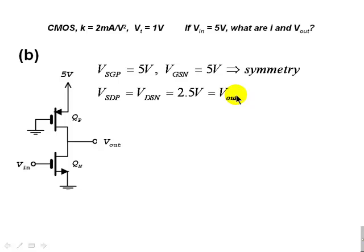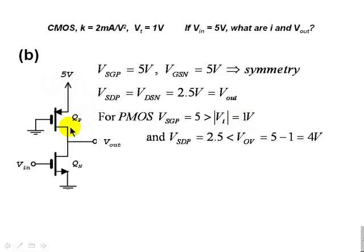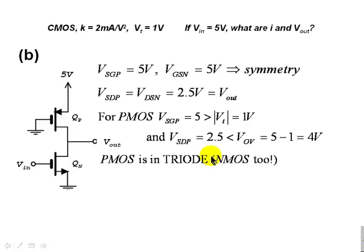What about the current? Let's first determine the mode of operation of each transistor. For the PMOS, the source-gate voltage is 5V, which is more than VT, so it's not cut-off. The source-drain voltage is 2.5V, which is less than the overdrive voltage of 4V (= 5 − 1). So the P transistor is in triode mode. By the same reasoning, the NMOS transistor is also in triode mode.